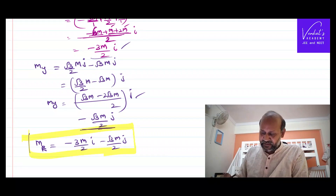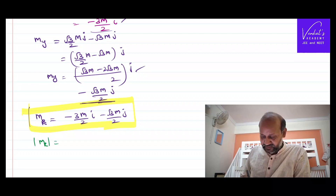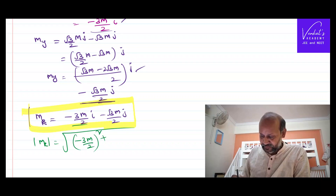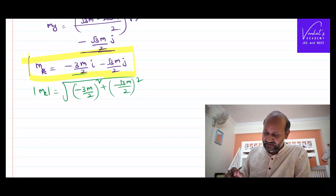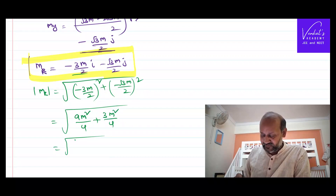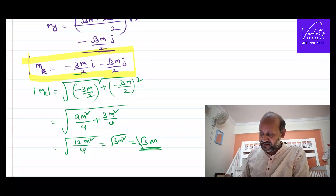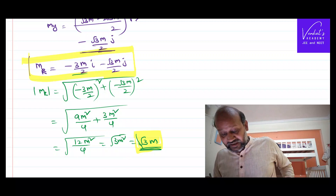That's the answer, though it may not look comfortable. Let me find the magnitude of that resultant vector. Magnitude = √[(−3m/2)² + (−√3m/2)²] = √[9m²/4 + 3m²/4] = √[12m²/4] = √(3m²) = √3 · m. So the resultant magnetic moment is √3m.